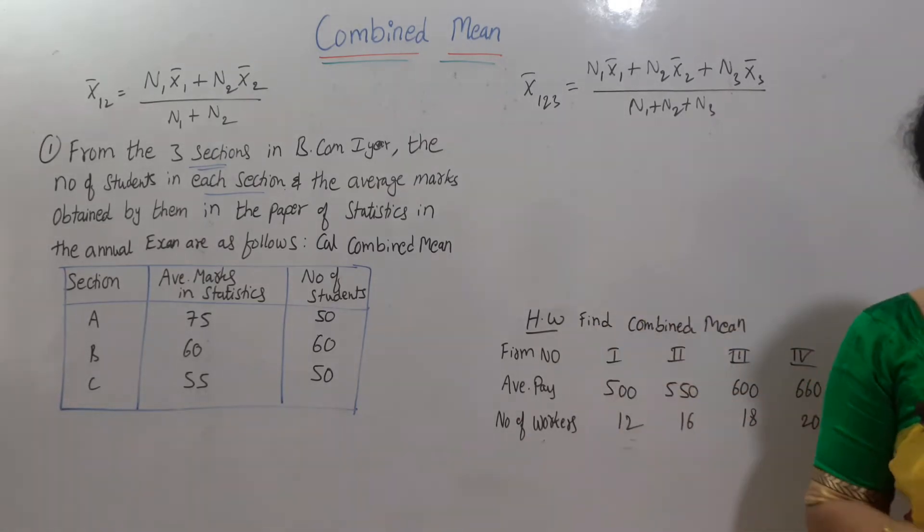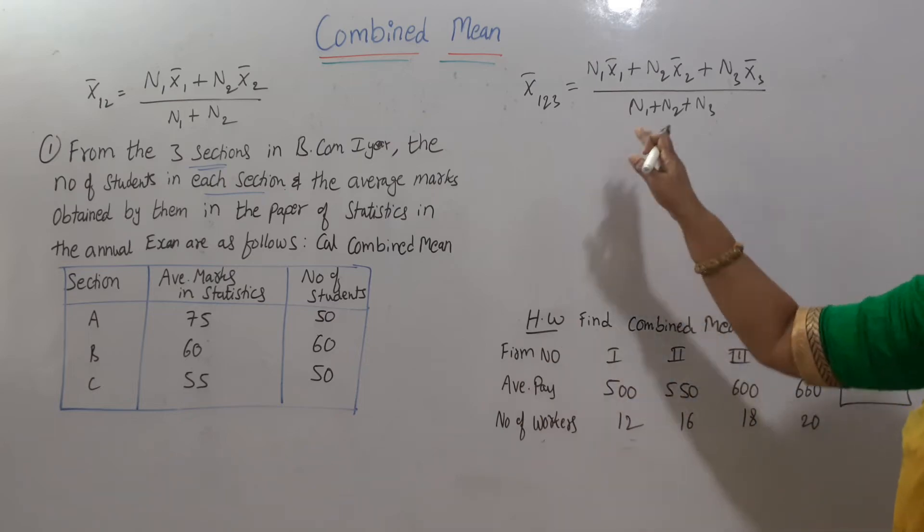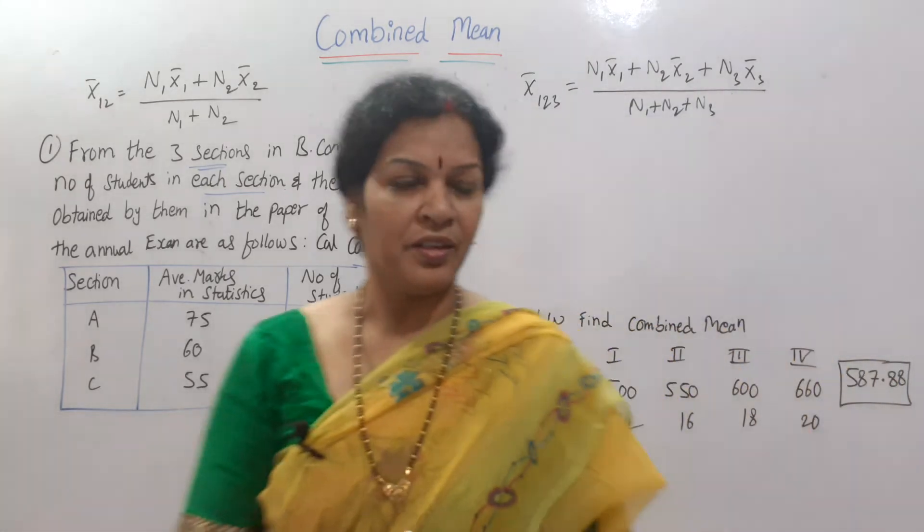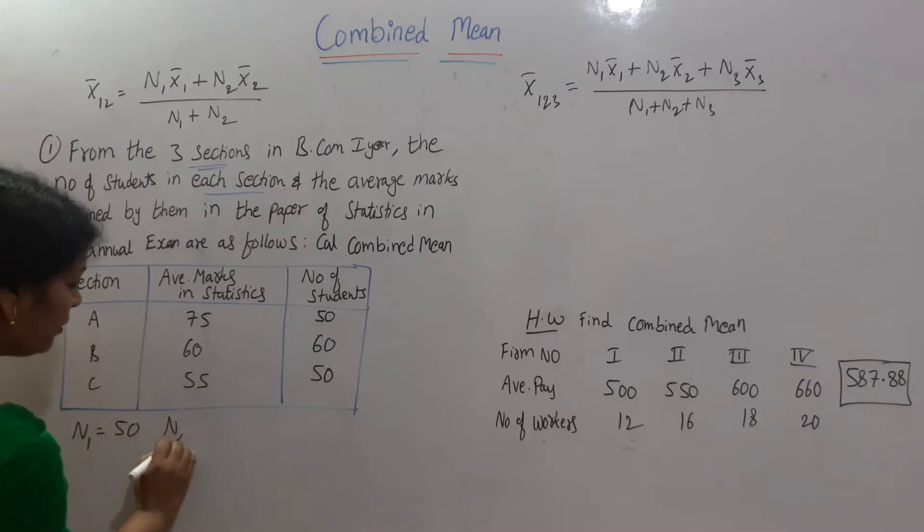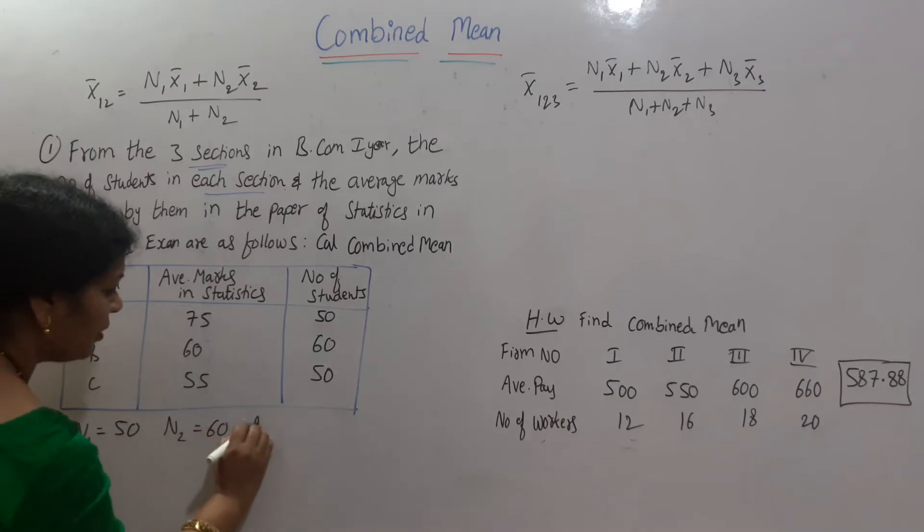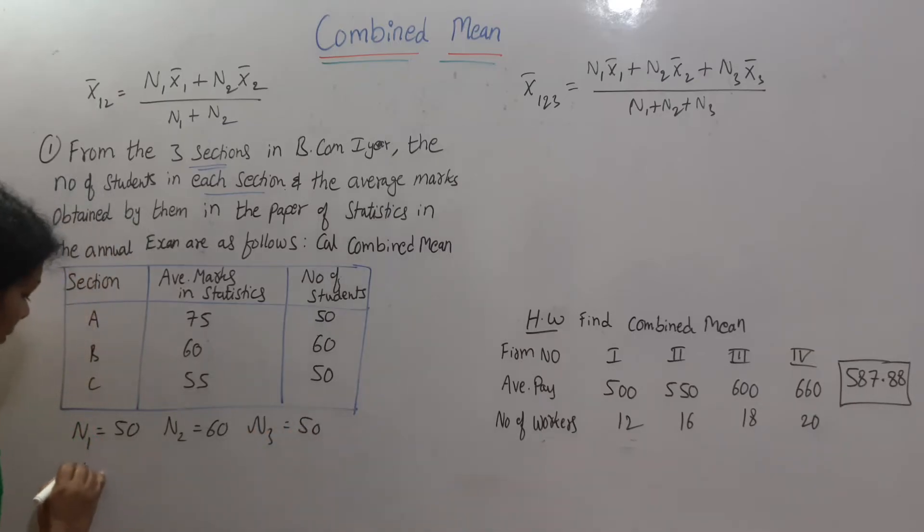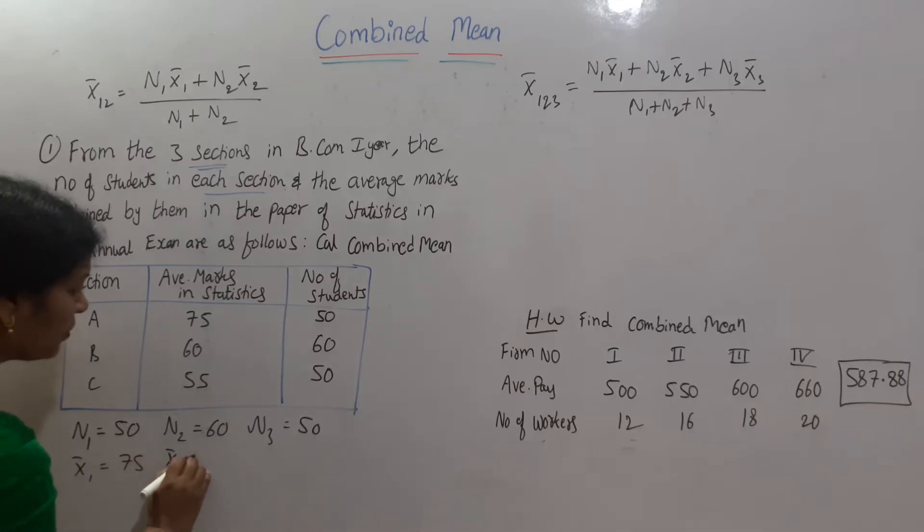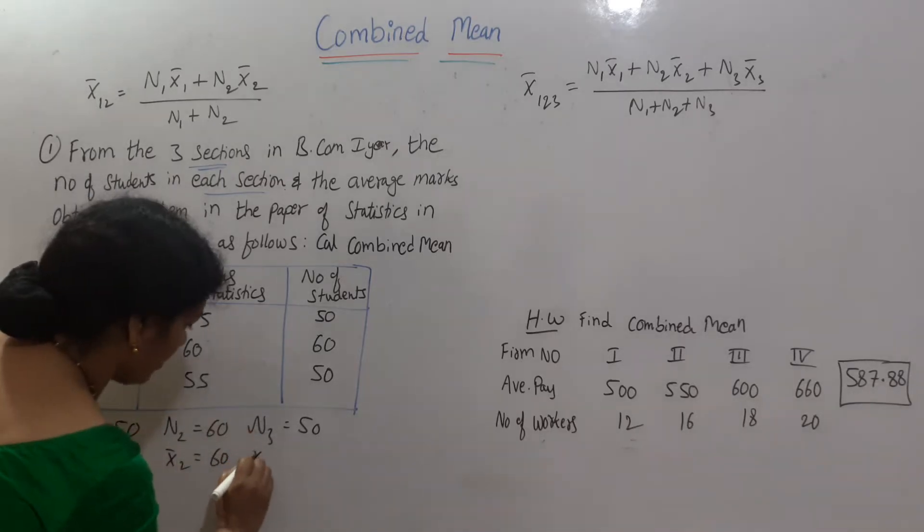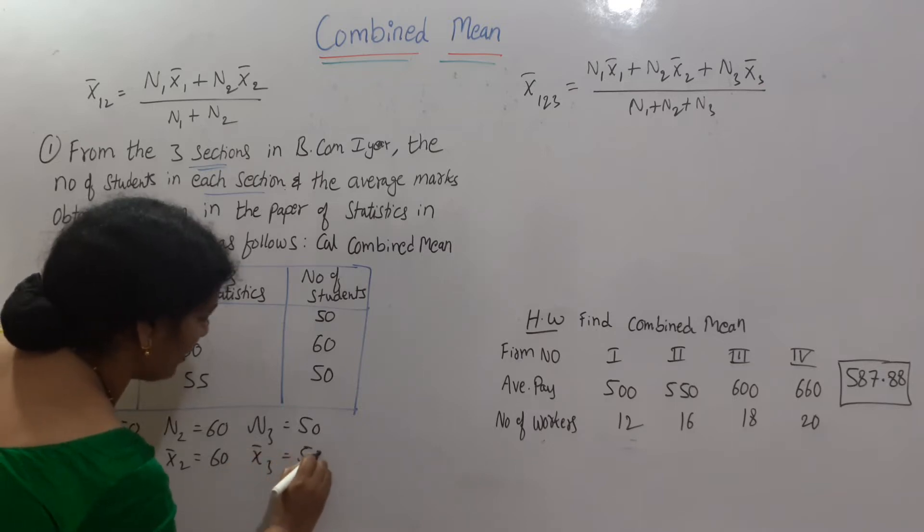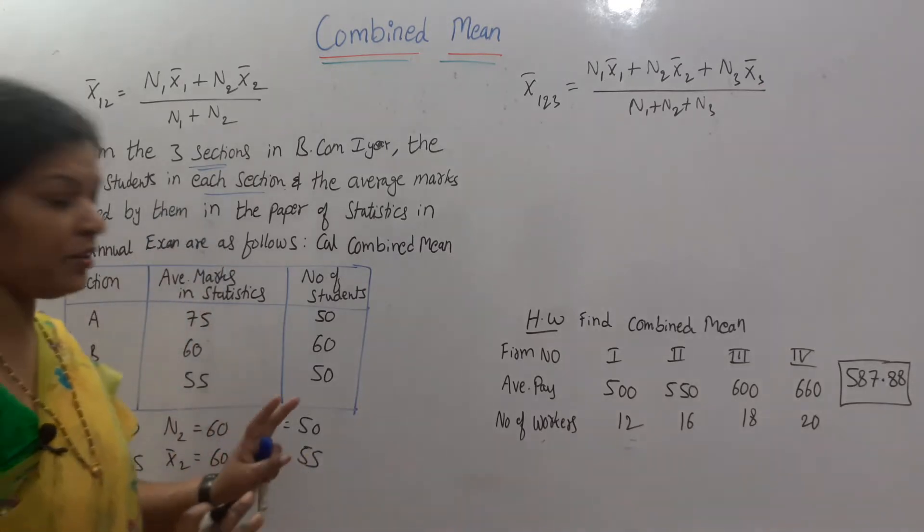If you want, you can write the formula related data also. Like here, n1 is equal to n1 is how much 50. In the same way, n2 60, n3 50. And in the same, X bar 1 is equal to 75, X bar 2 is equal to 60, and 50, X bar 3 is 55. Like you can write after this, after writing the formula.